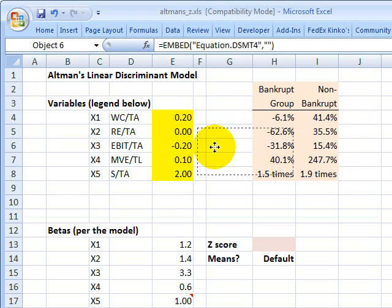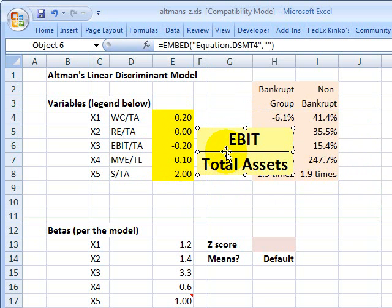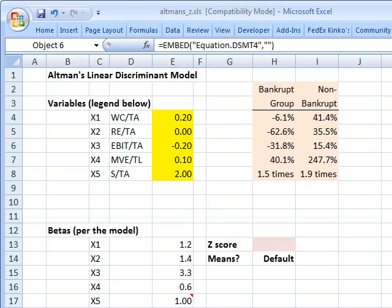The third variable is EBIT over total assets, where EBIT is earnings before interest and taxes. So this really is return on assets, classic measure, subclass of return on capital.